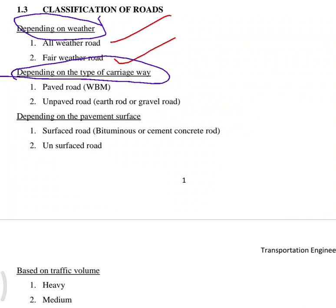That is the paved road and the unpaved road. Unpaved road includes earthen road and gravel road. Earthen road is a compacted earthen road, and there is also gravel road.